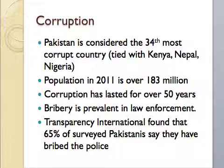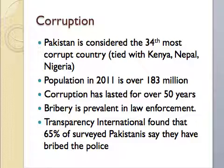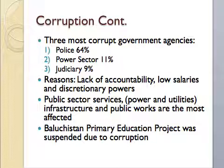Pakistan is considered the 34th most corrupt country, tied with Kenya, Nepal, and Nigeria. Corruption in the country has lasted over 50 years, and bribery is prevalent in law enforcement. Transparency International found that 65% of surveyed Pakistanis say they have bribed the police. The three most corrupt government agencies are the police at 64%, the power sector at 11%, and the judiciary at 9%. Reasons for corruption include lack of accountability, low salaries, and discretionary powers. Public sector services such as power and utilities, infrastructure, and public works are the most affected.